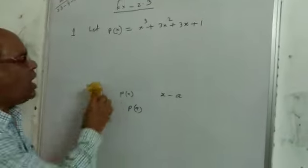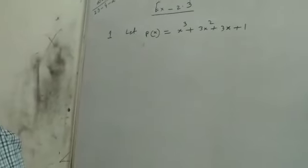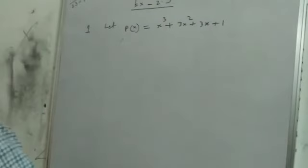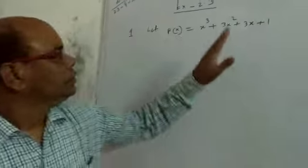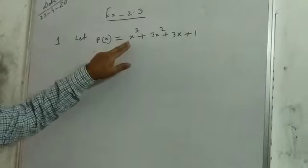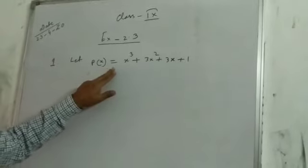Today I will start Exercise 2.3. See page number 40. Question number 1: Find the remainder when x³ + 3x² + 3x + 1 is divided by the given polynomials. We will use the Remainder Theorem to find the remainder. This is the polynomial for all question numbers 1, 2, 3, 4, 5. So we suppose P(x) equal to this polynomial.